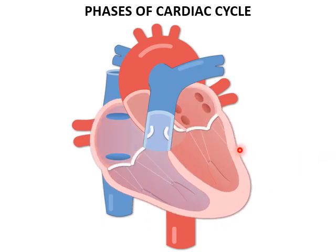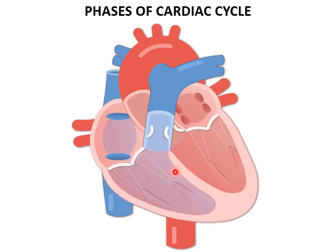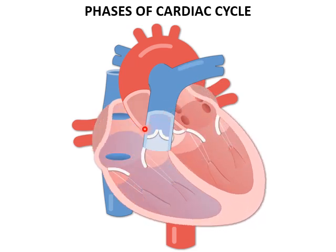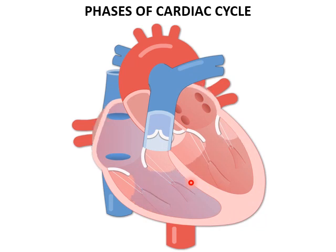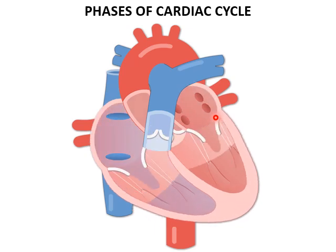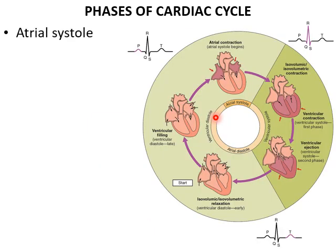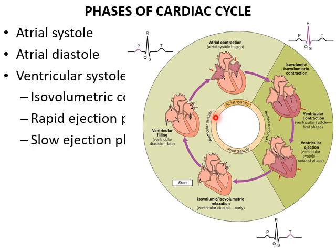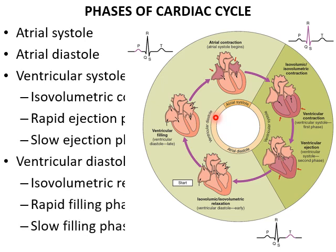From our anatomy knowledge, the heart consists of two muscles: the superior atrial muscle and the inferior ventricular muscle, separated by a fibromuscular ring. Hence the phases of the cardiac cycle are divided as atrial systole, atrial diastole, ventricular systole, and ventricular diastole. Ventricular systole is further subdivided into isovolumetric contraction, rapid ejection, and slow ejection phases. Ventricular diastole is divided into isovolumetric relaxation, rapid filling, and slow filling phases.